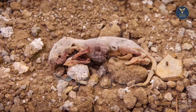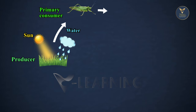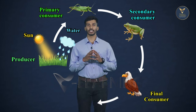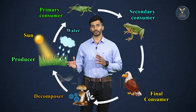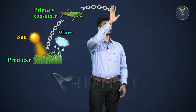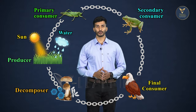Plants become food for the first consumers; the first consumers in turn become food for the second, and so on. When the last consumer dies, they decompose in the soil and become nutrients and manure for the plants to grow. So all these are interconnected — and this is called the food chain.